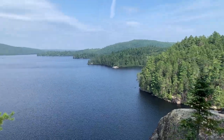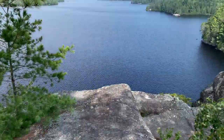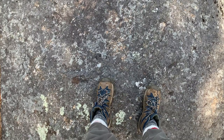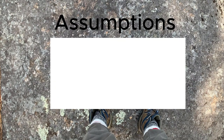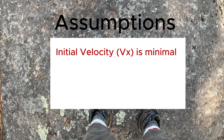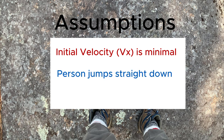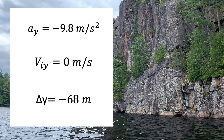Another assumption I'm going to make is that the initial velocity in the x component will be minimal — in a sense, we're assuming the person jumps straight down. That means this would be free fall motion, and with that we have everything we need to answer this question.